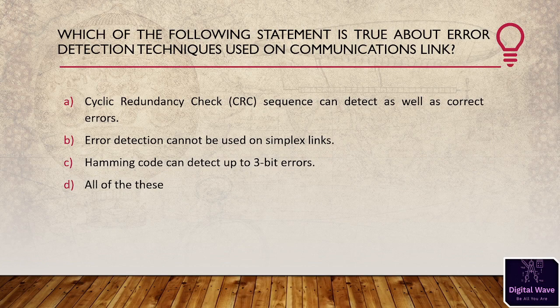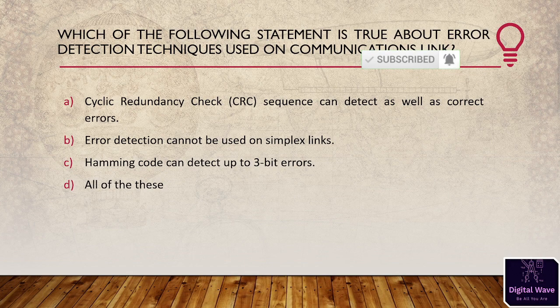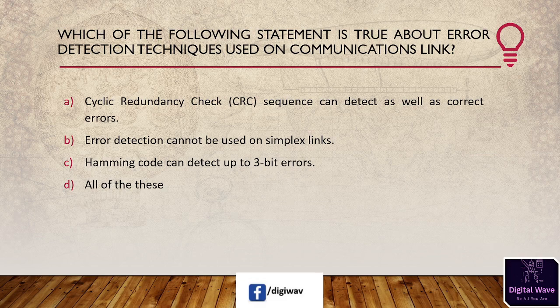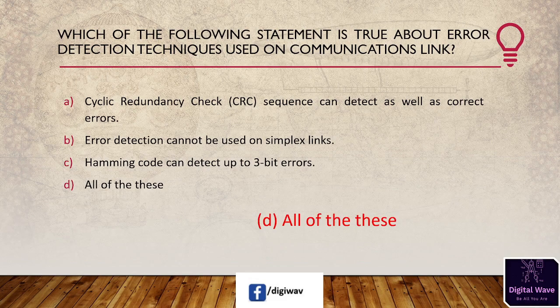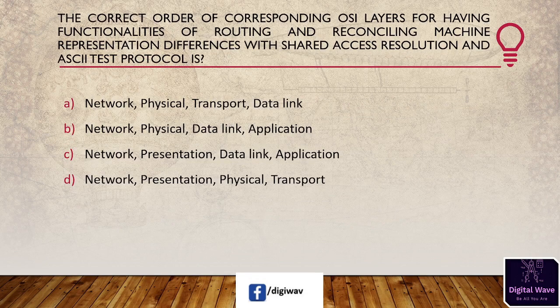Next question: which of the following statements is true about error detection techniques used on communication links? Options: (A) CRC can detect as well as correct errors; (B) error detection cannot be used on simplex links; (C) Hamming code can detect up to 3-bit errors; (D) all of these. The answer is D — all of these statements are correct.